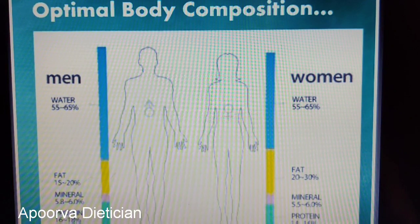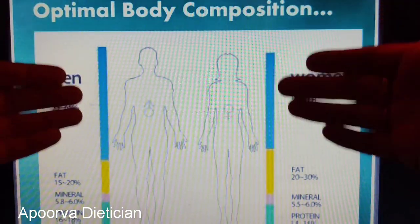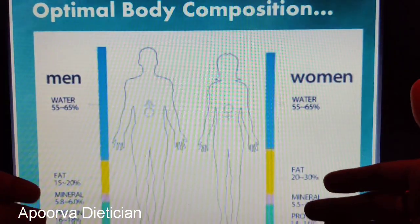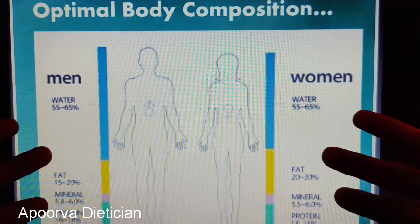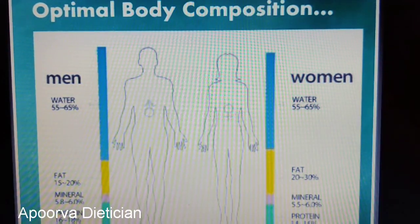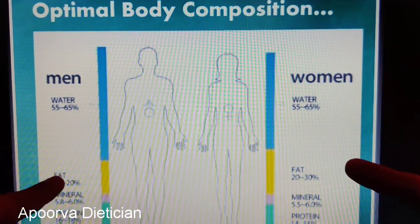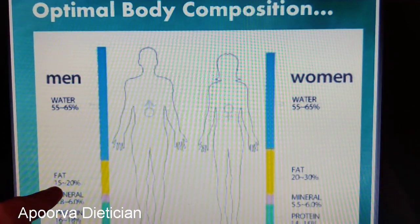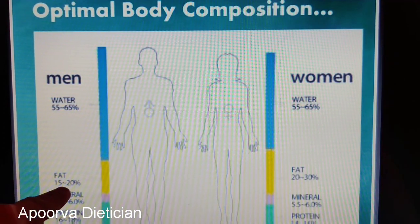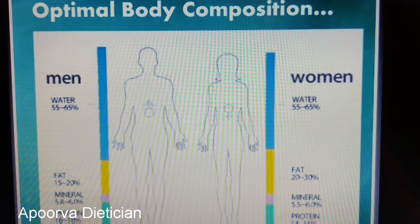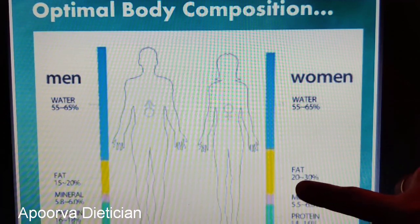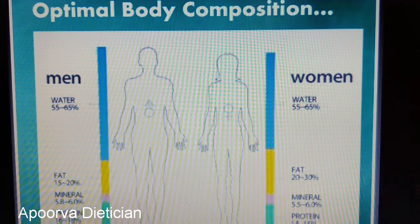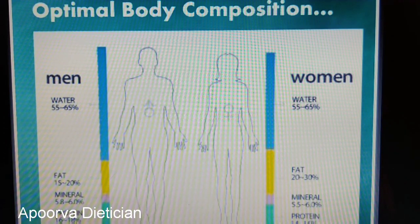For optimal body composition, the fat percentage differs between men and women. For men, the optimal body fat percentage is between 15–20%, and for women it is 20–30%. The remaining categories remain with slight differences and are almost the same.